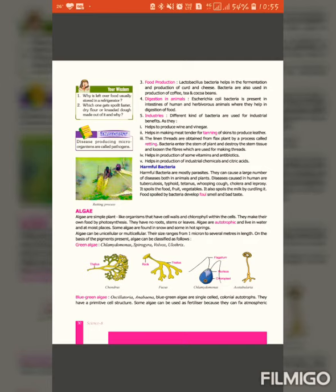Blue-green algae are single-celled colonial autotrophs. They always live in colonies and they have a primitive cell structure. Some algae can be used as fertilizers because they can fix atmospheric nitrogen. Here are different types of algae with their particular labeling. These are green algae and blue-green algae.